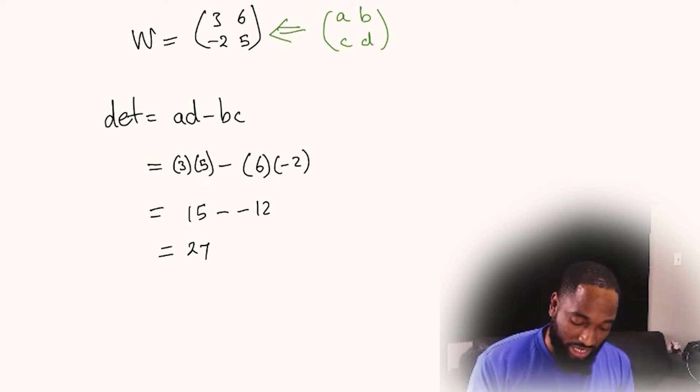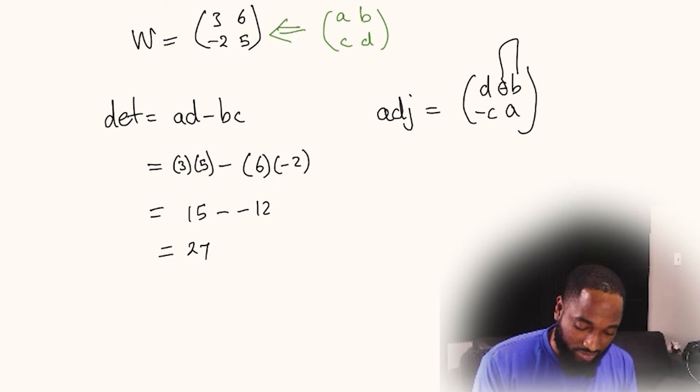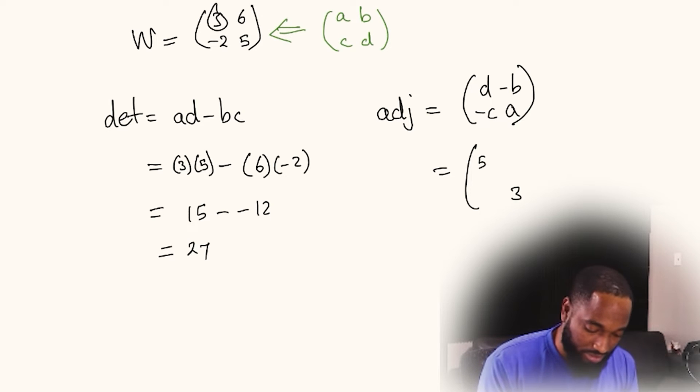Then you find the adjoint. The formula for the adjoint is that you're going to swap the d and the a, and you're going to switch the signs on the b and the c. To indicate that we are switching signs, we use this negative. What we'll end up with is five here and three there. This will turn to positive two and this will turn to negative six.